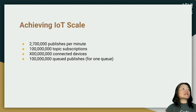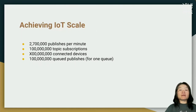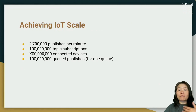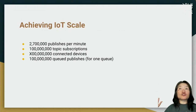With MQTT and pub-sub, it supports IoT at massive scale: 2.7 million publishers per minute, 100,000 topics per subscription — these are very real capabilities, not a joke.